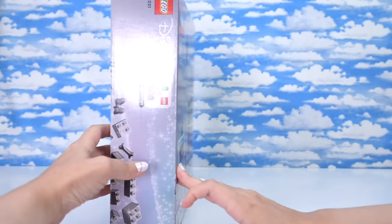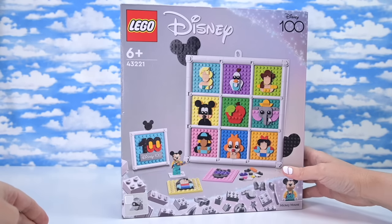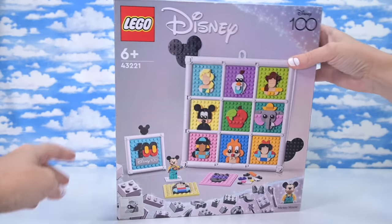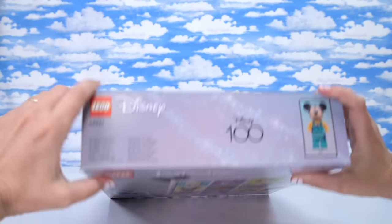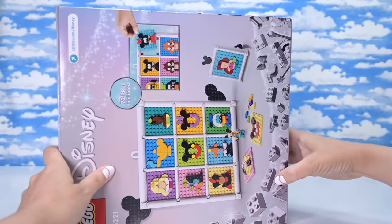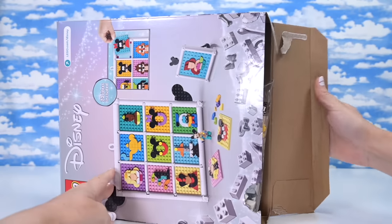Now I'm going to explain as we go along. The name of this set is 100 Years of Disney Animation Icons. It's a whole heap of Disney iconography which you build in little portraits and then you can display them.